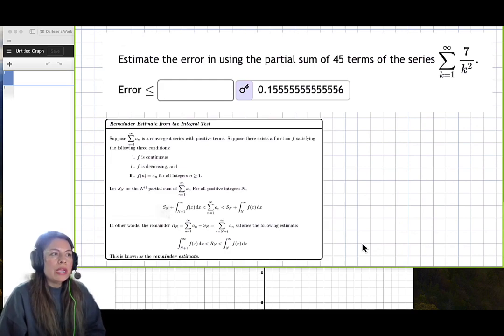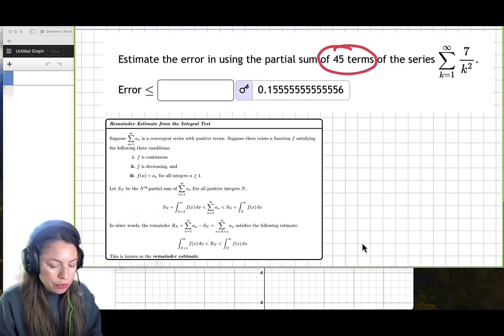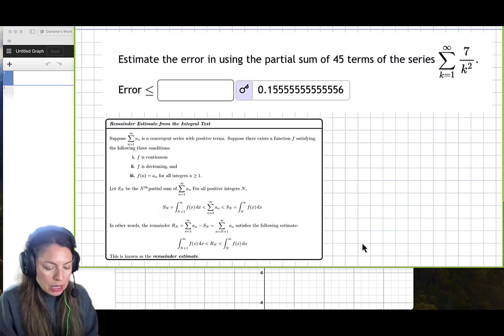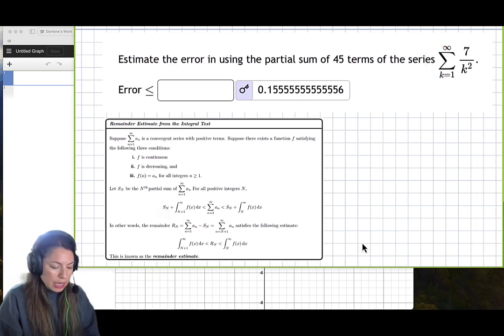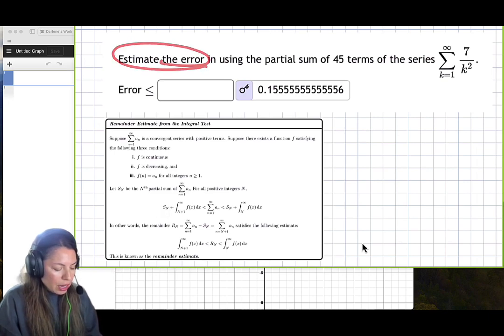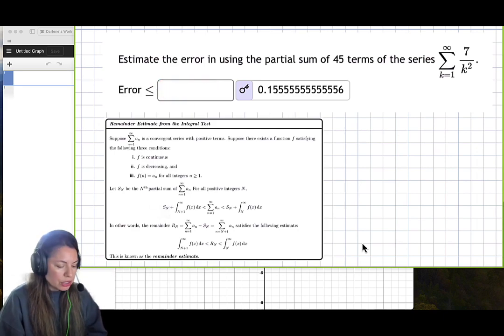We are going to take the partial sum of the first 45 terms of the series 7 over k squared to estimate the error and the largest it can be.